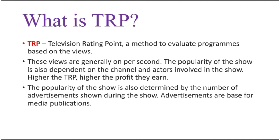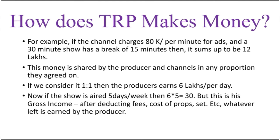TRP is Television Rating Point. Now, how does TRP make money? For example, if a channel charges 8,000 rupees per minute for ads and a 30-minute show has a break of 15 minutes, that sums up to 12 lakhs. This money is shared by the producer and the channel in whatever proportion they agree upon. If they agree on a 1-to-1 ratio, then the channel receives 6 lakhs and the producer of that program also receives 6 lakhs.